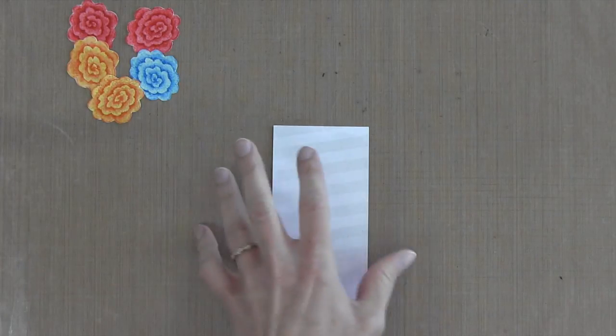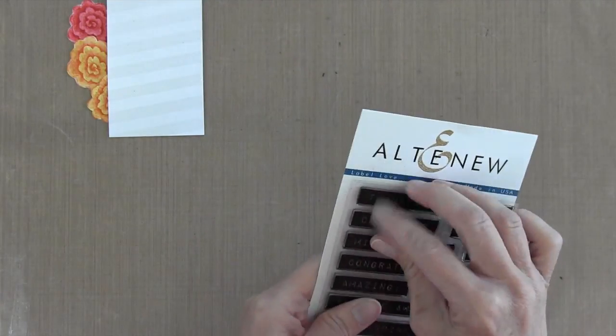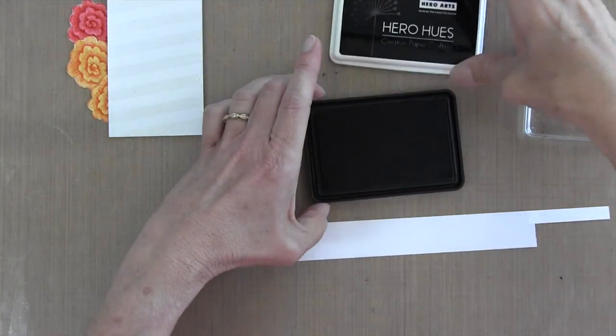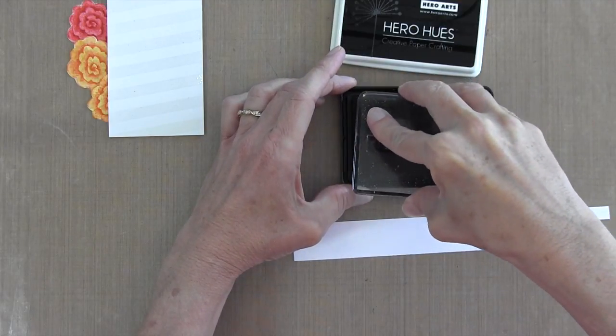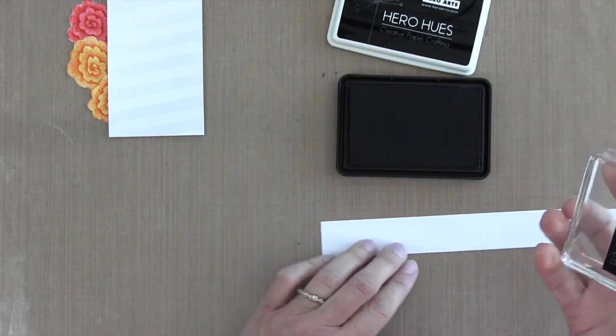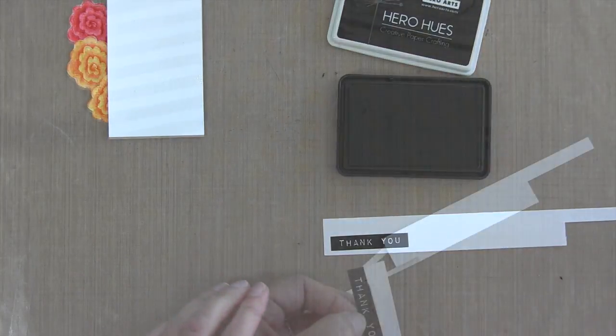I decided to add some contrast with my sentiment. So I'm using the Altenew Label Love Set. It's a white on black. So I'm going to stamp it with my Hero Hues black ink and then I'm going to cut it out. This gives a really nice crisp impression. I'm really impressed with this particular brand of ink.